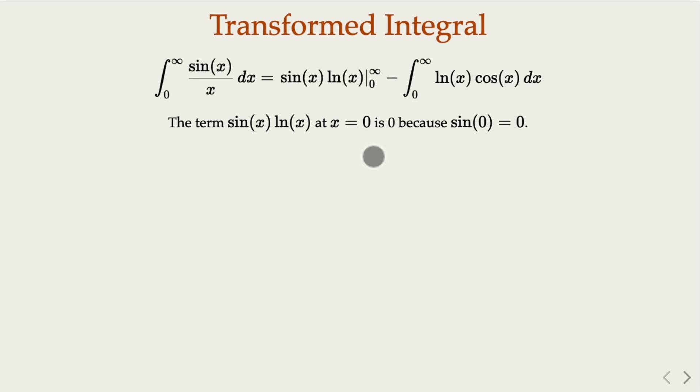And at infinity, it's indeterminate because sine x when x goes to infinity fluctuates between negative 1 and 1. So with this one, we're not going to get anywhere. We're going to abandon this approach.